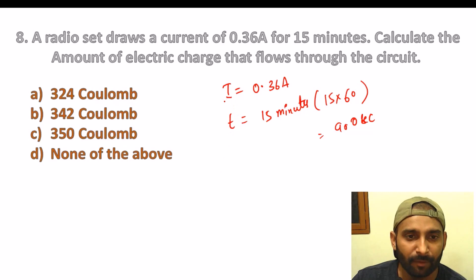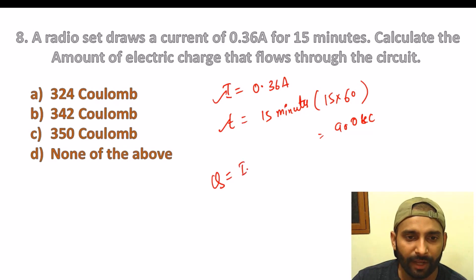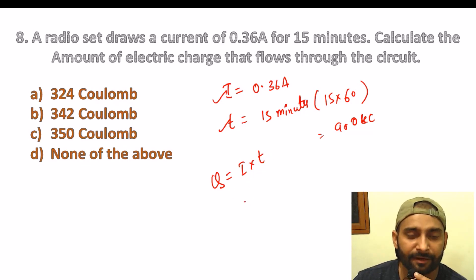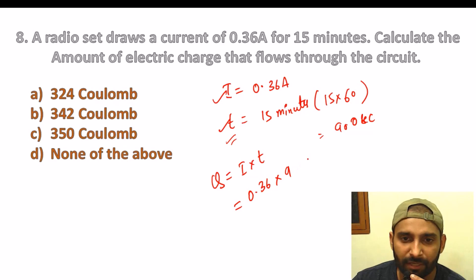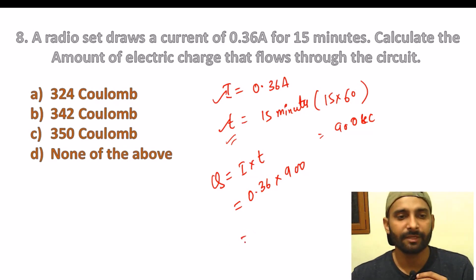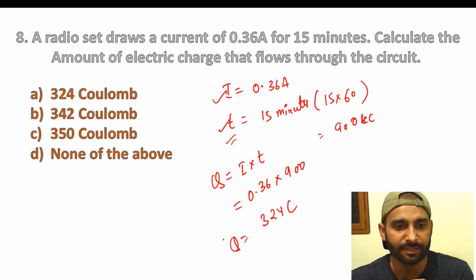So 15 minutes converted to seconds: multiply by 60, that gives 900 seconds. Here we have two given values — I and t. The formula is Q = I × t. So Q = 0.36 × 900 = 324 Coulombs. That is your correct answer option.